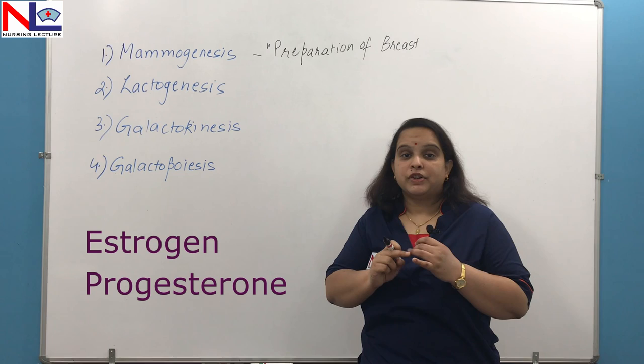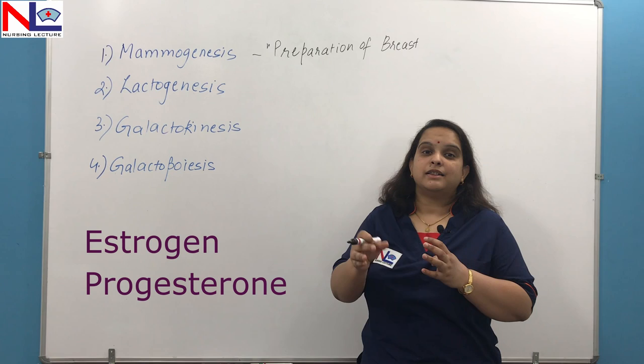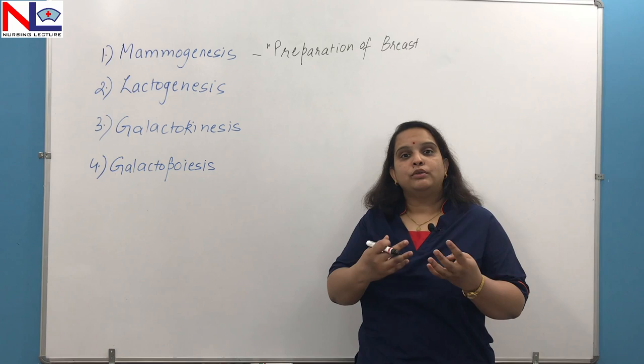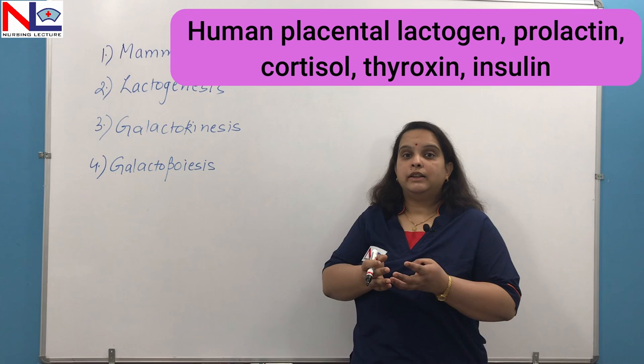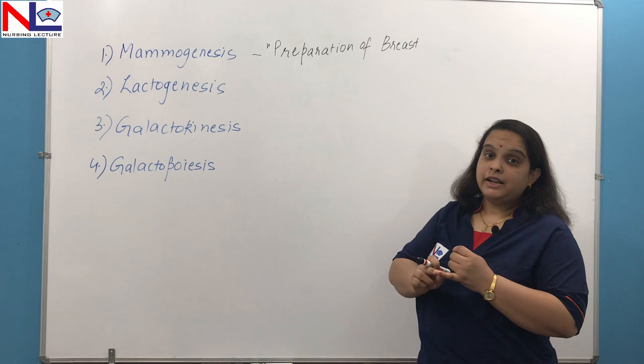The responsible hormones in mammogenesis are estrogen and progesterone, mainly estrogen and progesterone, because they help in proliferating the ducts, alveoli, and the lobules. But there are other hormones which contribute to their proliferation: human placental lactogen, prolactin, cortisol, thyroxine, and insulin. These all contribute in the formation of breast tissues, but mainly it is estrogen and progesterone.